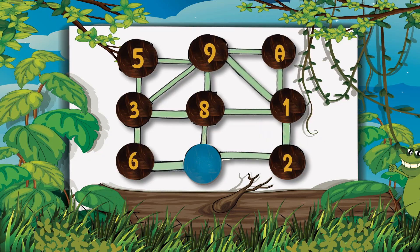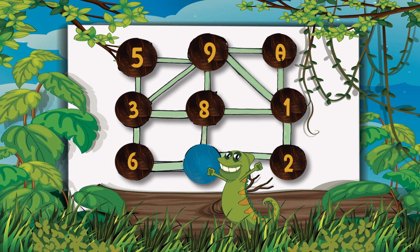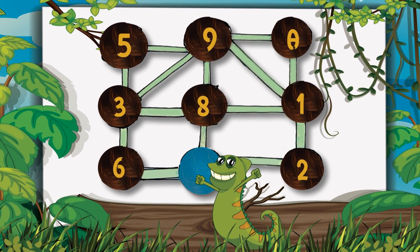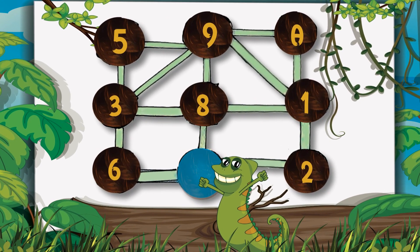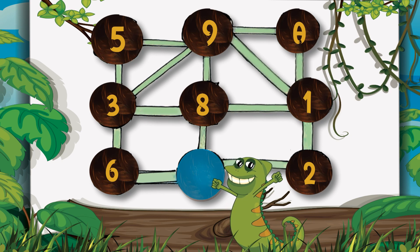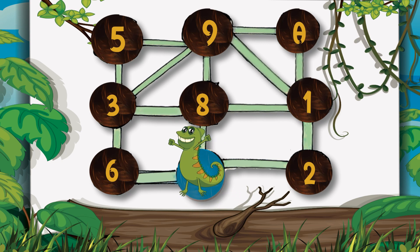A lizard moves from one hole to another. As it moves, it eats insects hidden in the holes. The number of insects in each hole is shown. The lizard can move only along the lines. Starting from the blue hole in the picture, the lizard goes to 3 holes to eat 18 insects. This is the path the lizard takes.